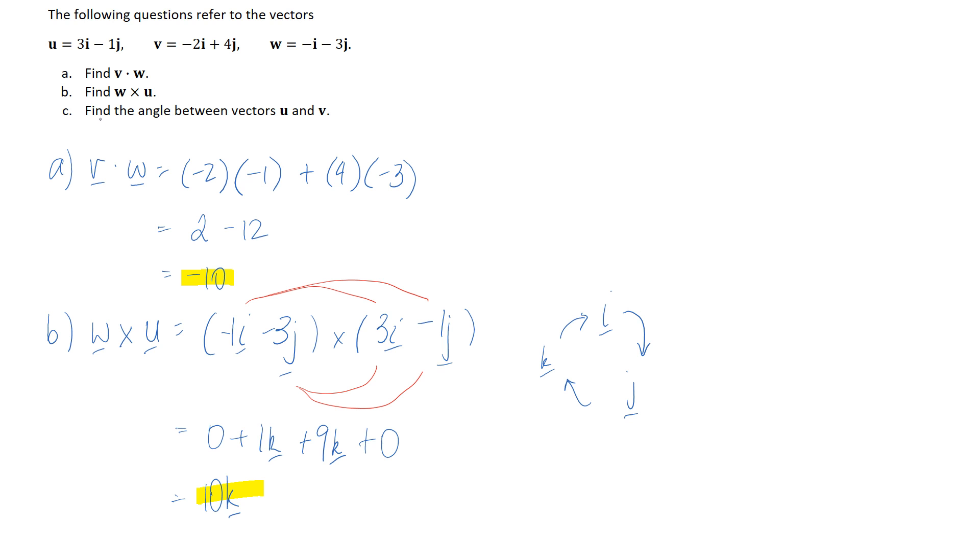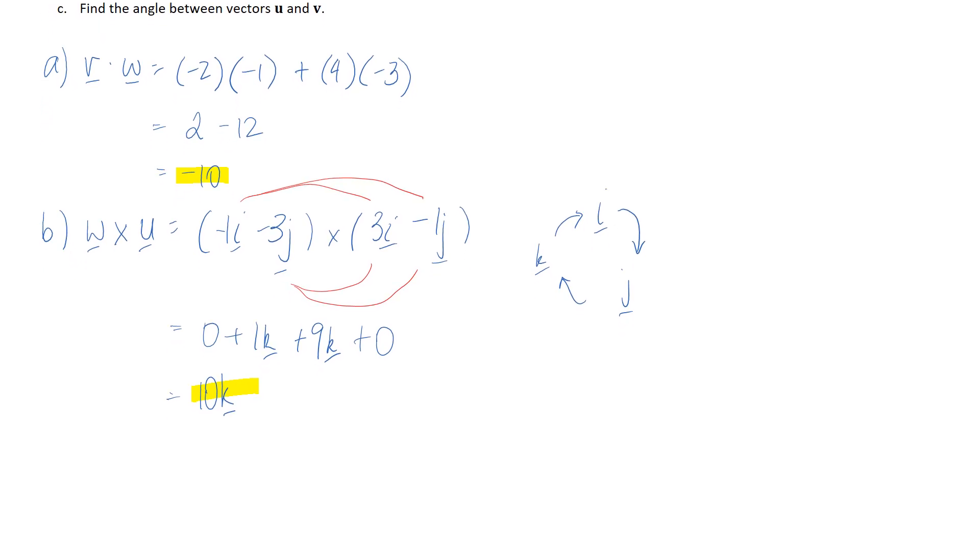So we have one thing left and that's to find the angle between the vectors u and v. So we have two kind of options for which equation to use for this calculation. So one of them is based on cos of the angle between and for this we would do the dot product on the numerator and divide by the magnitude of each vector multiplied together.